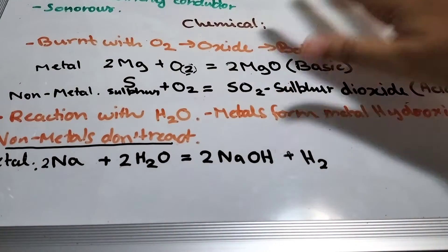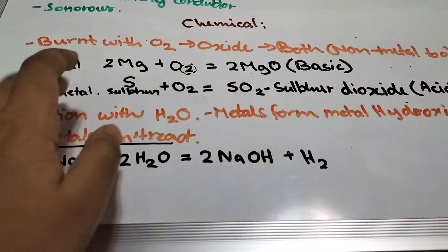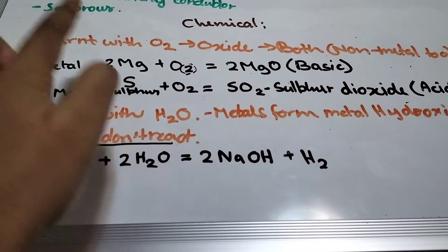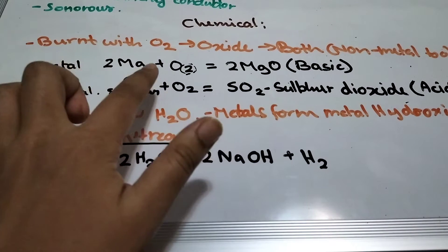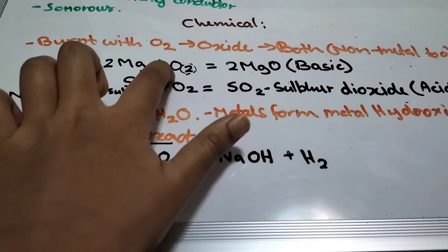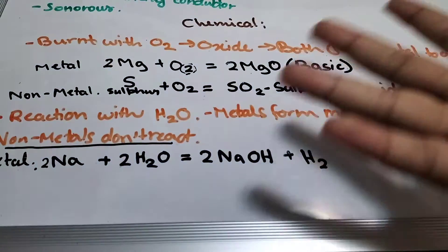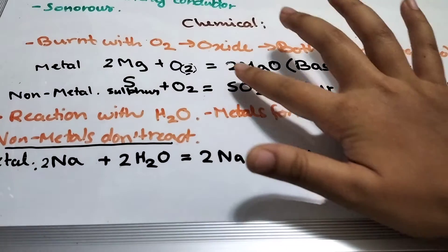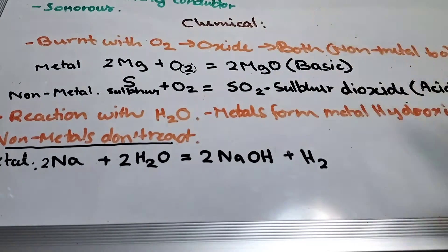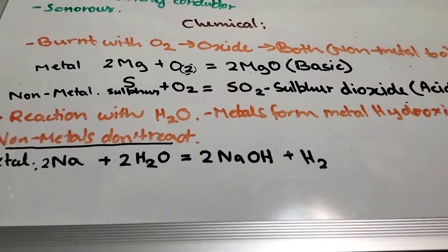Now for chemical properties. If any of these are burnt with oxygen, they will create an oxide — and this applies to both metals and non-metals. For metals, two magnesium atoms (2Mg) plus two atoms of oxygen (O₂) will form magnesium oxide (2MgO).